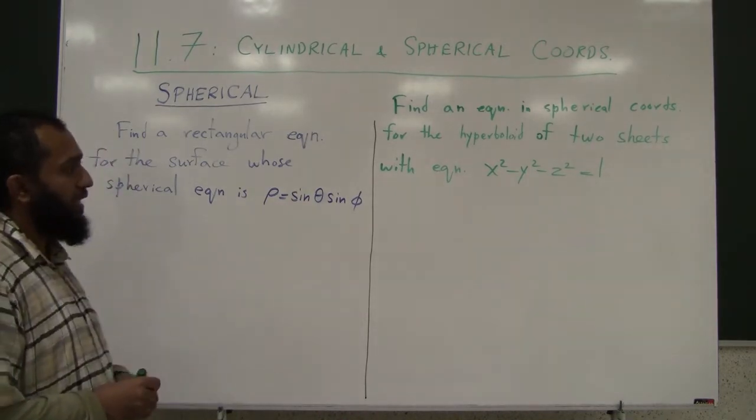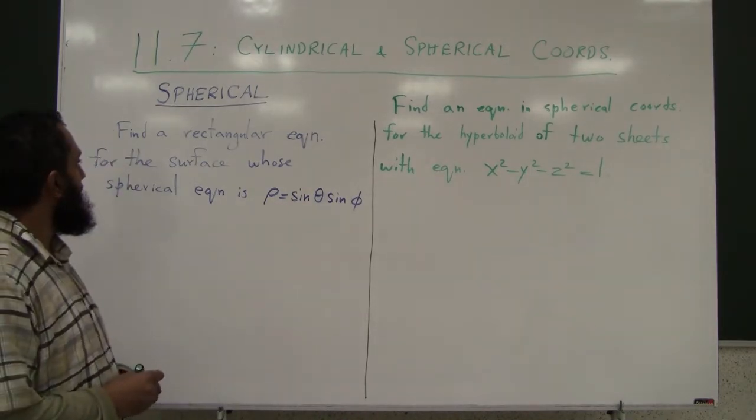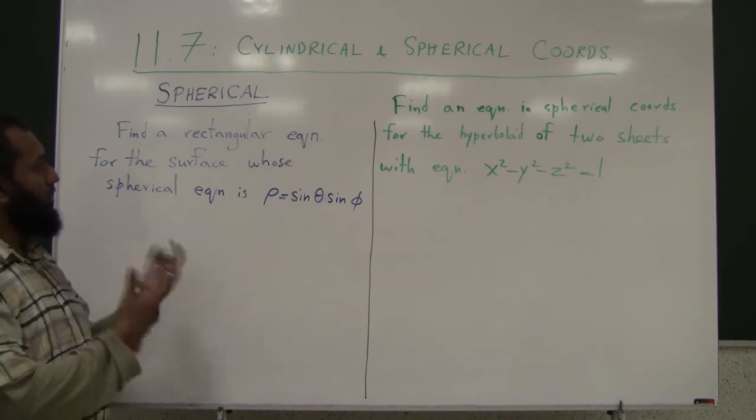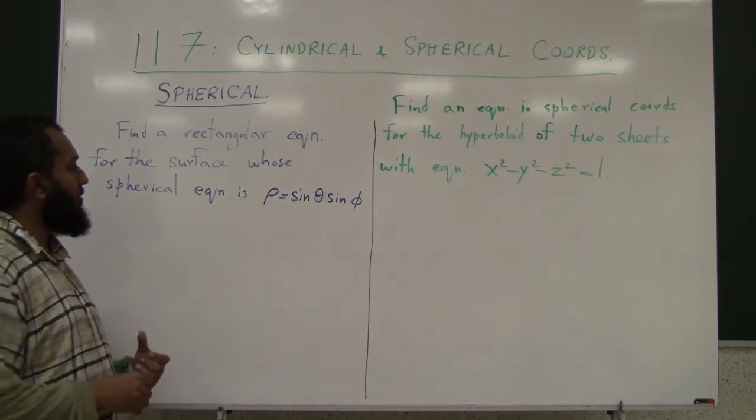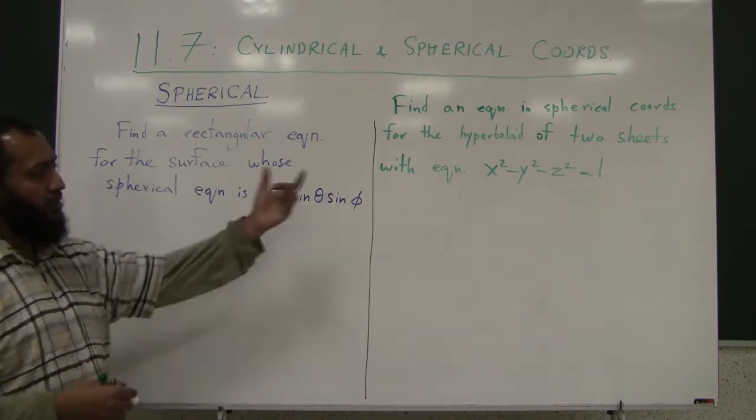Okay, what we will do for this last lecture of this section is, just like you did for cylindrical coordinates, take an equation in spherical coordinates, convert it to rectangular and vice versa.